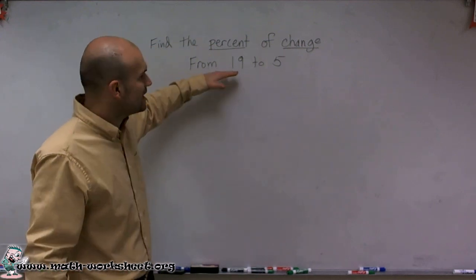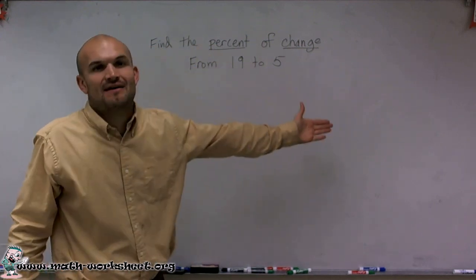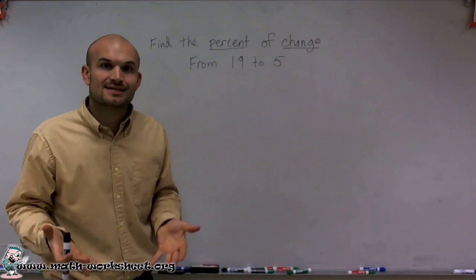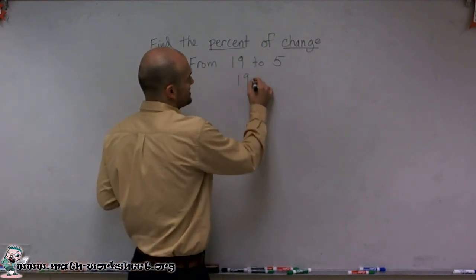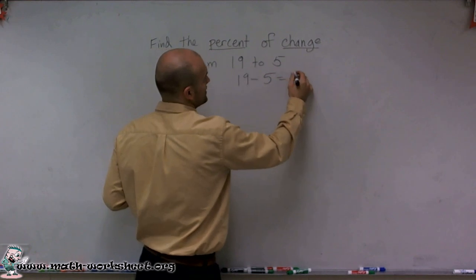So first of all, we need to say, what is the change from 19 to 5? To find the change, what they're really asking us is the difference. So to find the change, I can simply say 19 minus 5 is going to be 14.